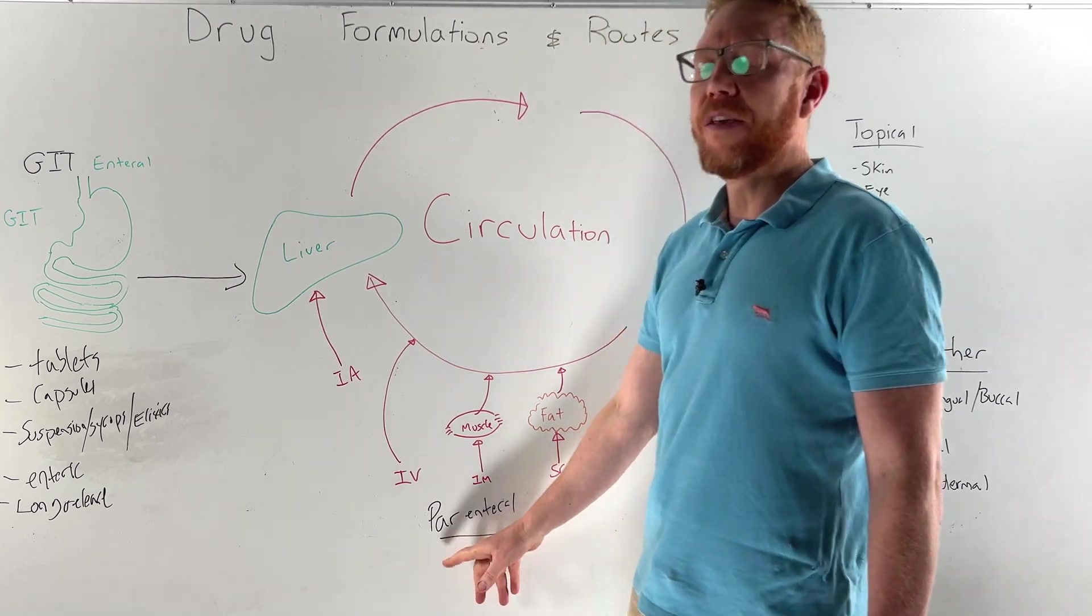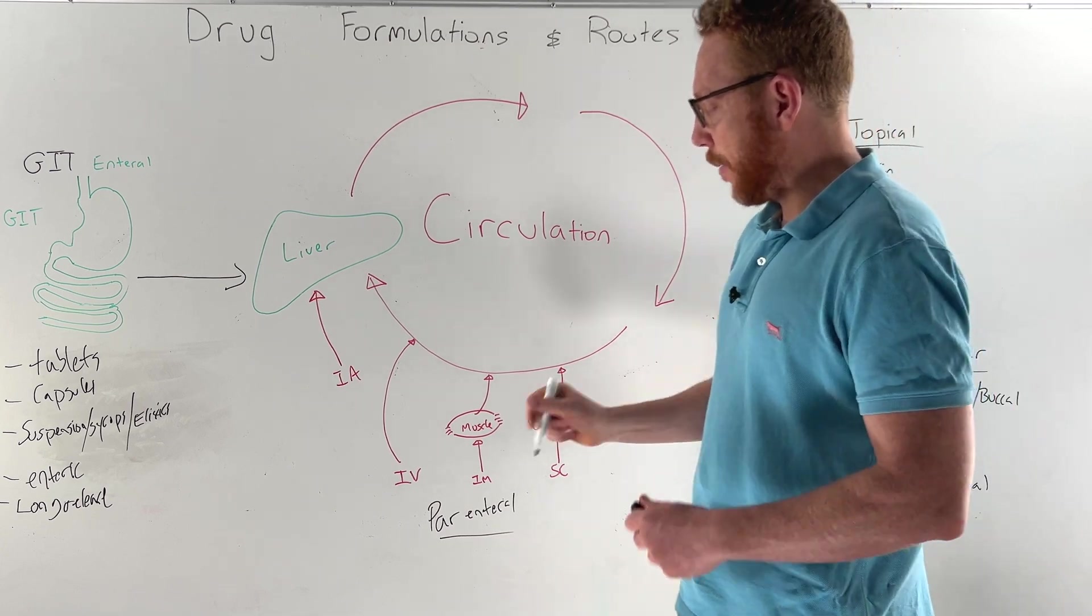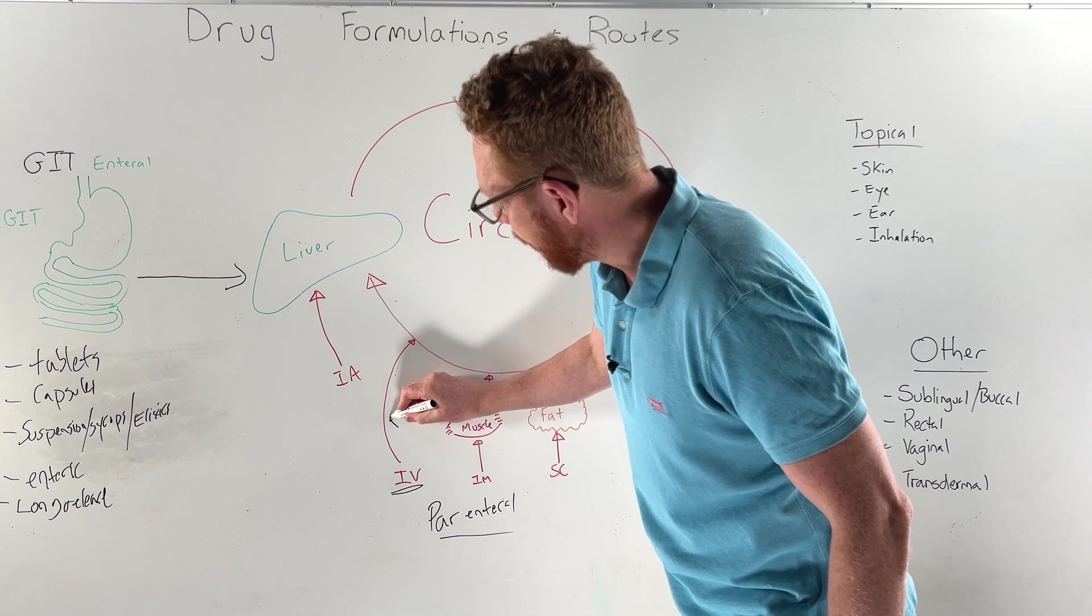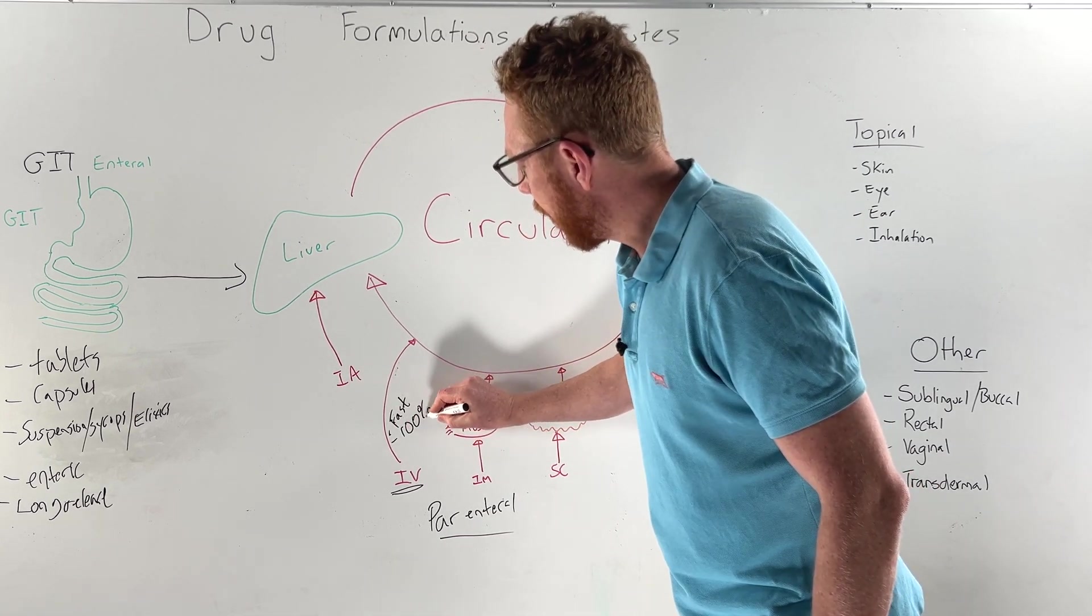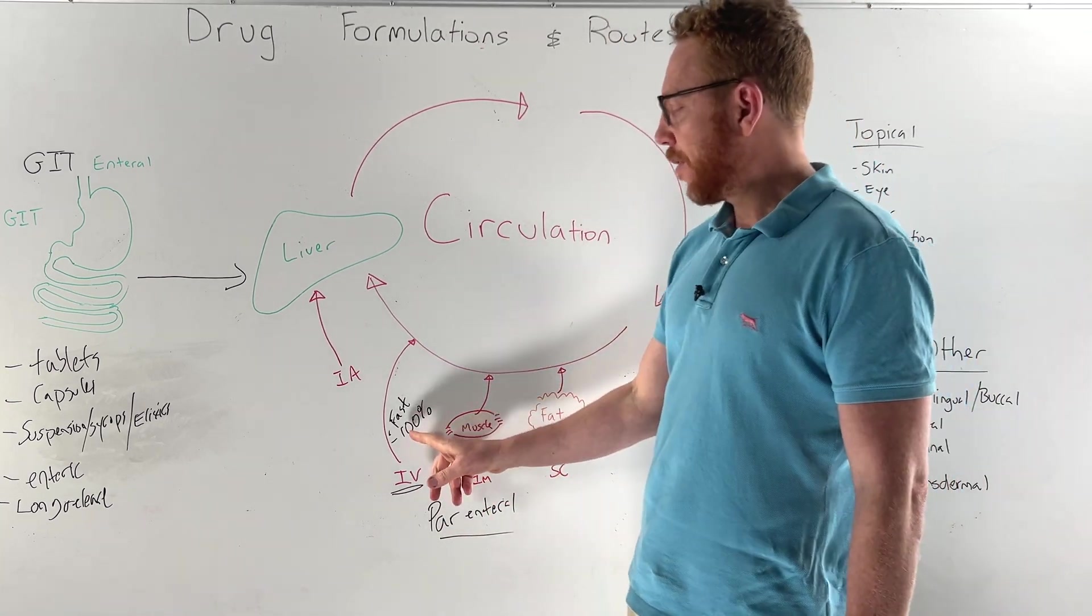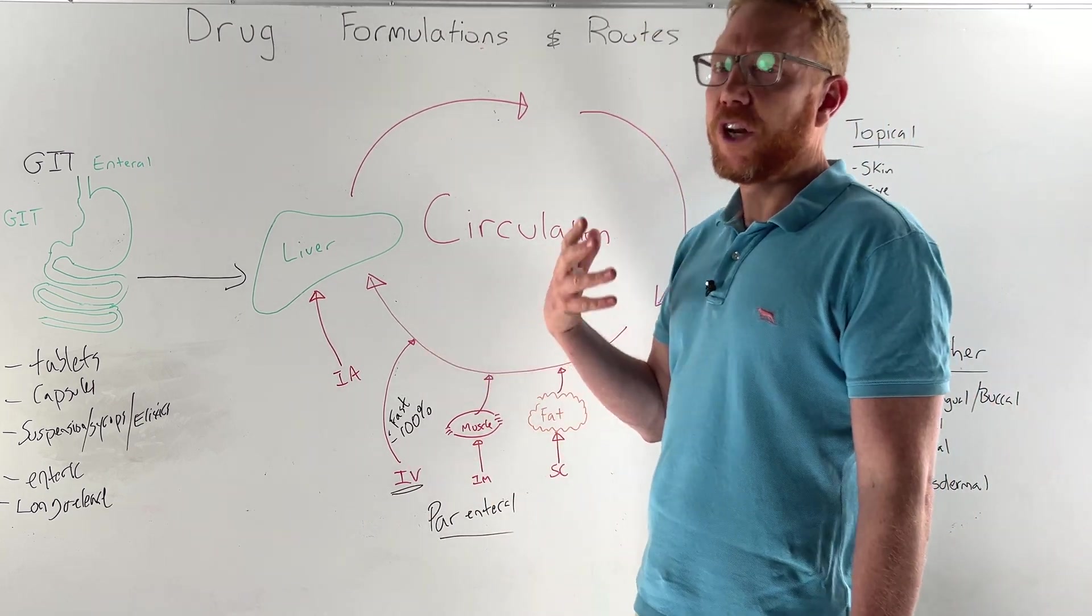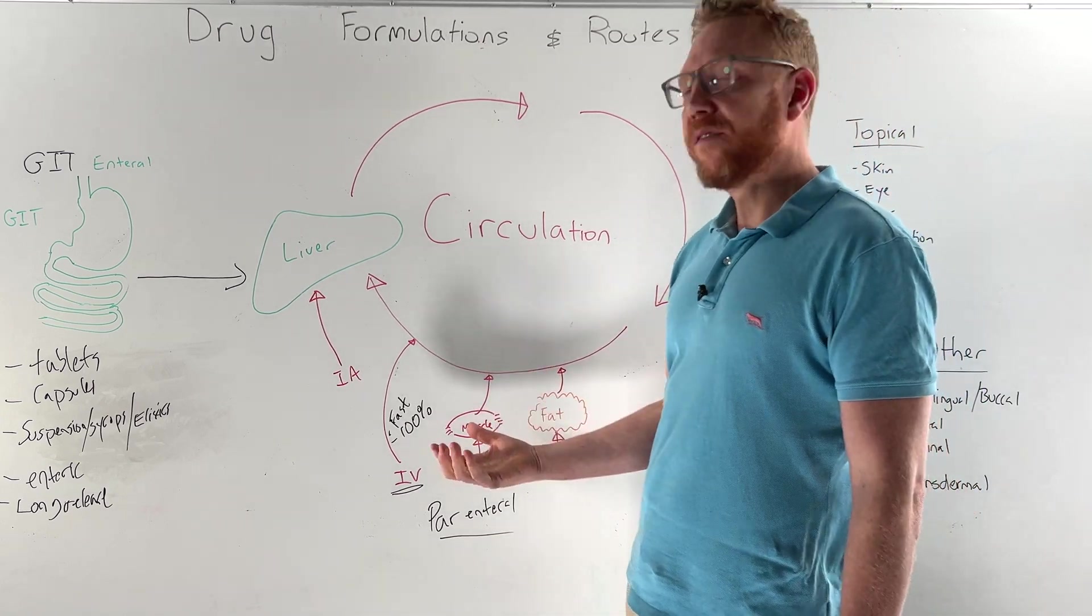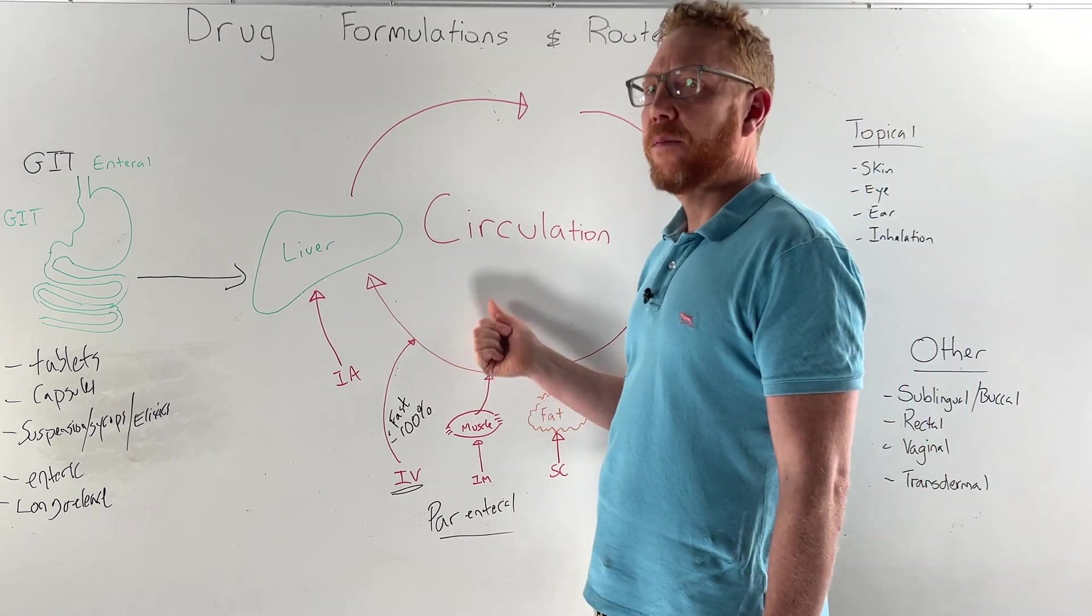Here are the injectable examples - parenteral, meaning we bypass the intestines. Common examples would be intravenous. Intravenous as an advantage is very fast, immediate. As I said, it's 100% bioavailable, meaning of the dose you give 100% will reach the circulation. Some drawbacks with the IV route is that it needs a professional to administer, so it generally needs to be in some kind of healthcare location. It's also an infection risk because you're introducing a needle straight into the circulation.